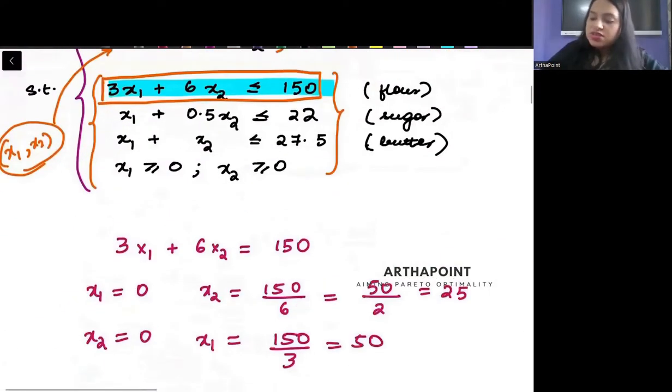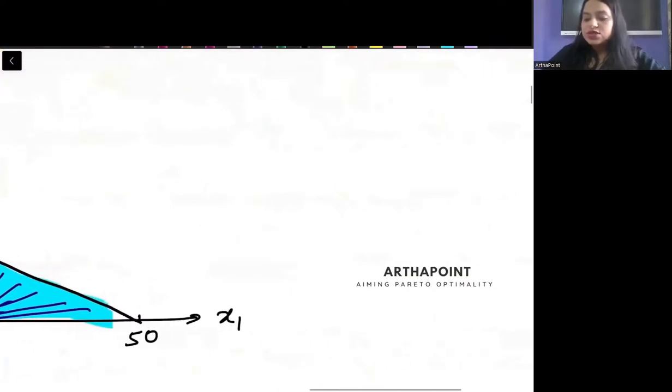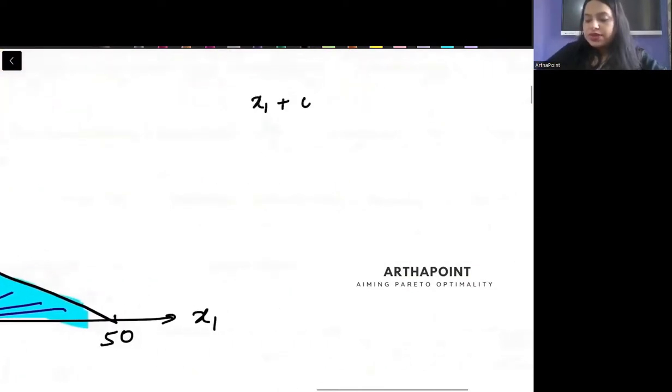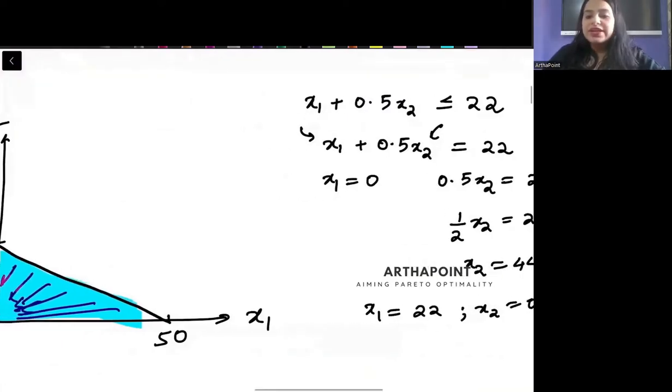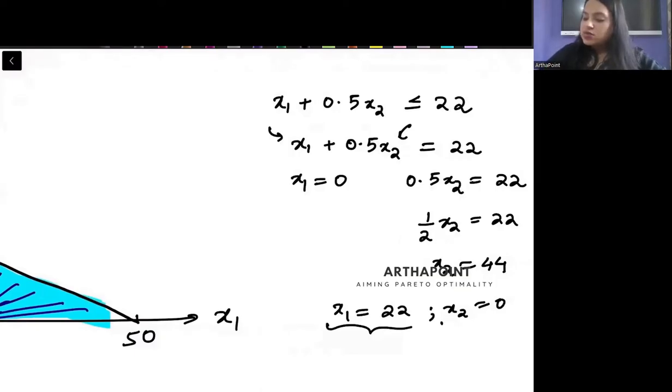Now look here into the second equation. This says x1 plus 0.5 x2 less than equal to 22. We will do the same process. First convert this into an equality constraint. Then let me put x1 as 0. If I plug 0 here, I will get 0.5 x2 is 22. Half x2 is 22, so x2 is 44. Then I will put x2 as 0, so I will get x1 is equal to 22. Either x1 is 22 or x2 is 44.